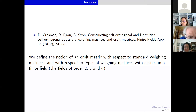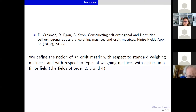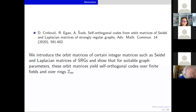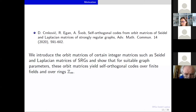We extended this work not just to Hadamard matrices but also to weighing matrices, showing how to construct self-orthogonal and Hermitian self-orthogonal codes from their orbit matrices over finite fields — specifically fields of order 2, 3, and 4. This led us to the main idea: introduce the notion of orbit matrices of certain integer matrices, such as Seidel and Laplacian matrices of strongly regular graphs, and show that for suitable graph parameters one can construct self-orthogonal codes over finite fields.